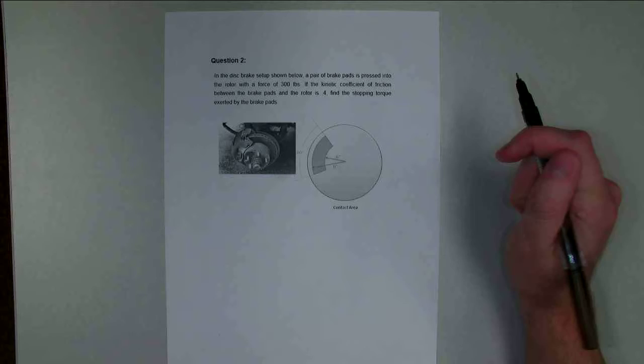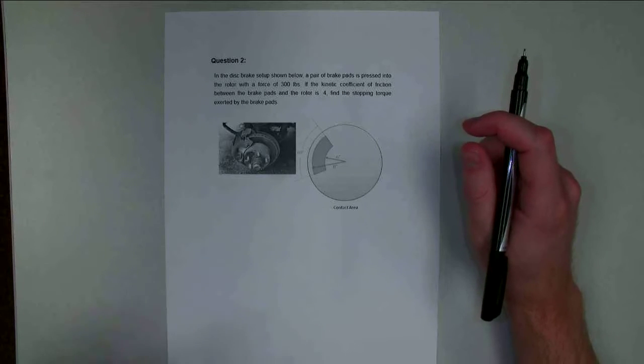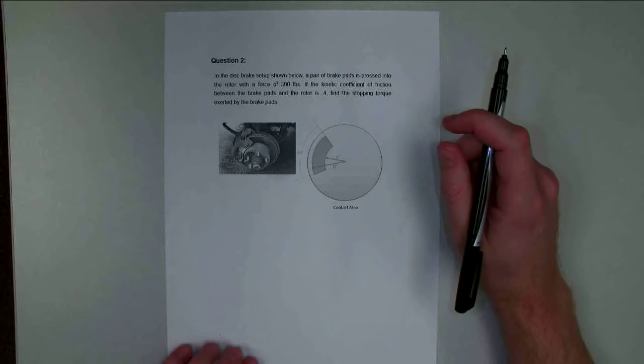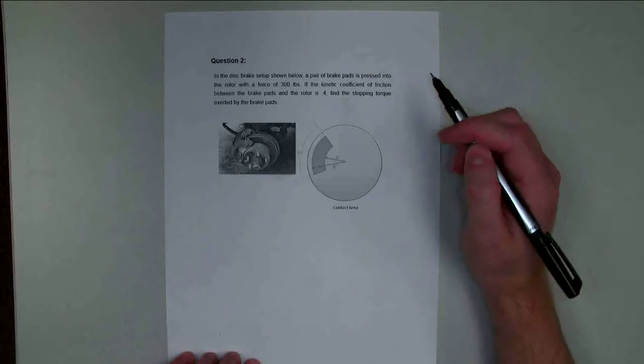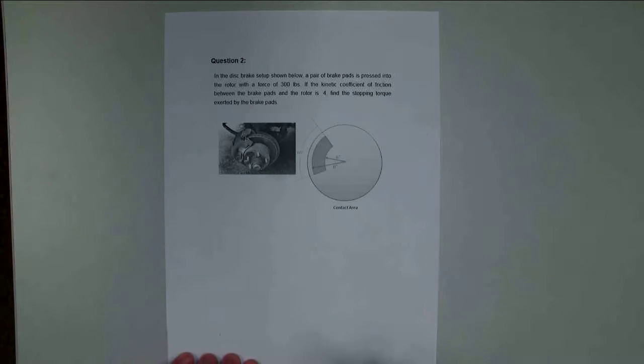This pair of brake pads is going to pinch down on the rotor with 300 pounds of force. If we know the kinetic coefficient of friction between the brake pad and the rotor is 0.4, we want to find the stopping torque exerted by these brake pads.